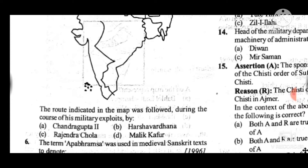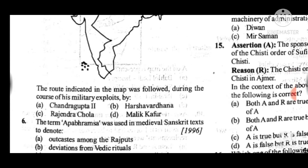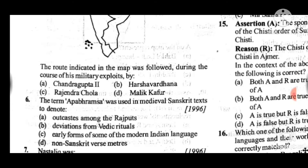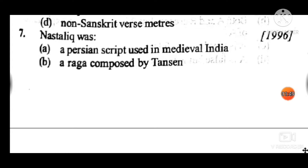Question 6: The term Apabhramsha was used in medieval Sanskrit texts to denote — answer to question 6 is C: early forms of some of the modern Indian languages. Question 7: Nastaliq was — answer to question 7 is A: a Persian script used in medieval India.